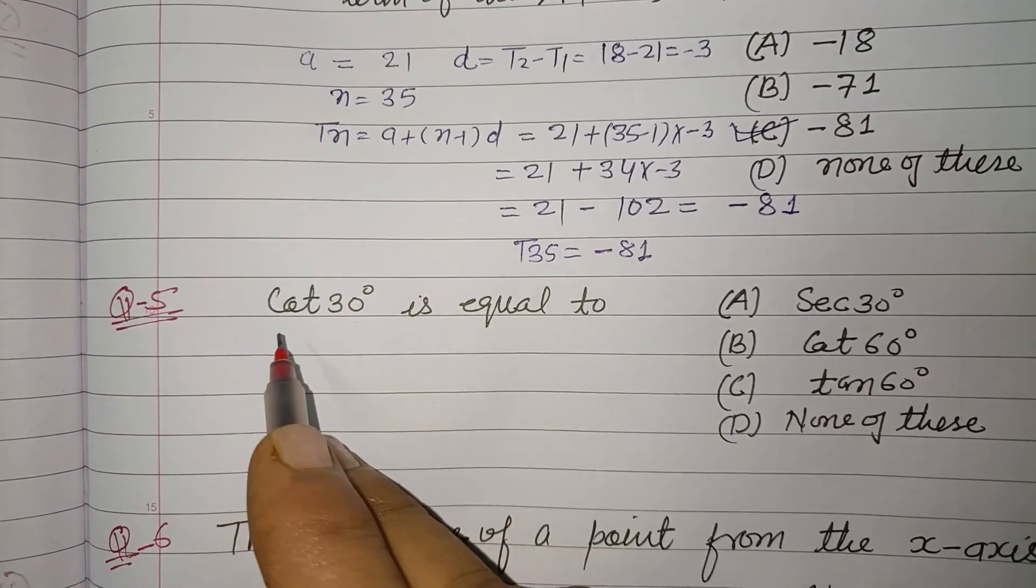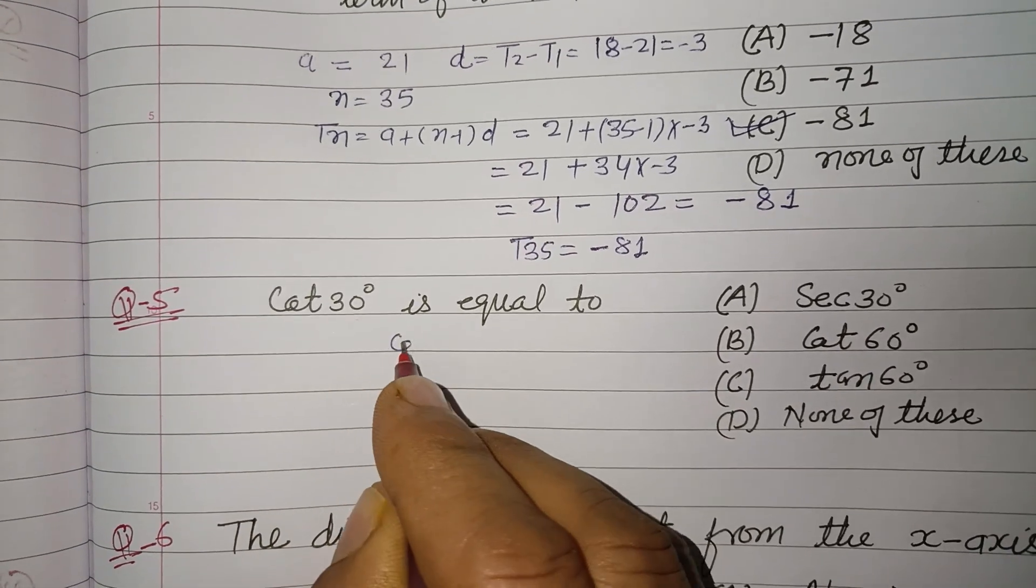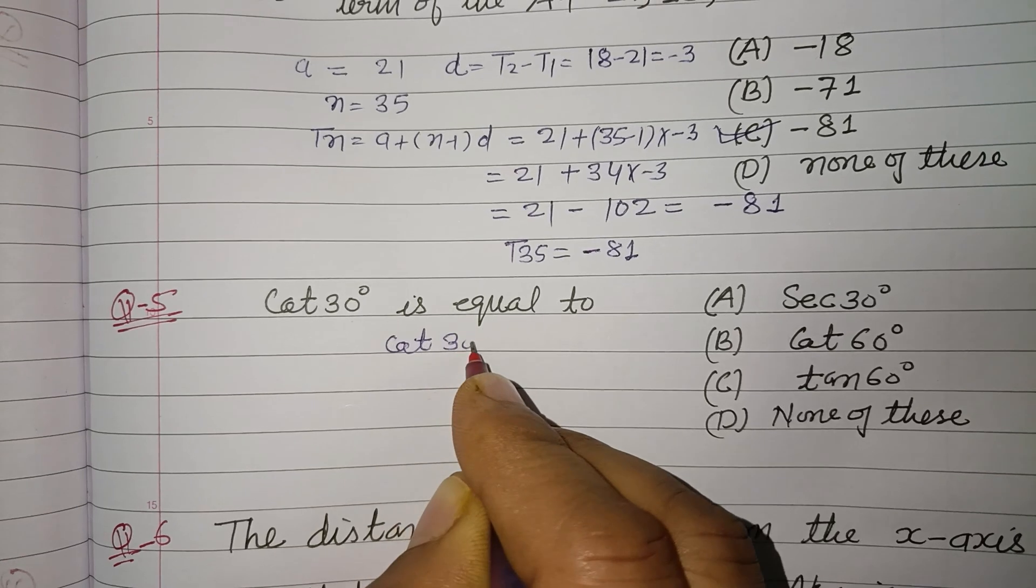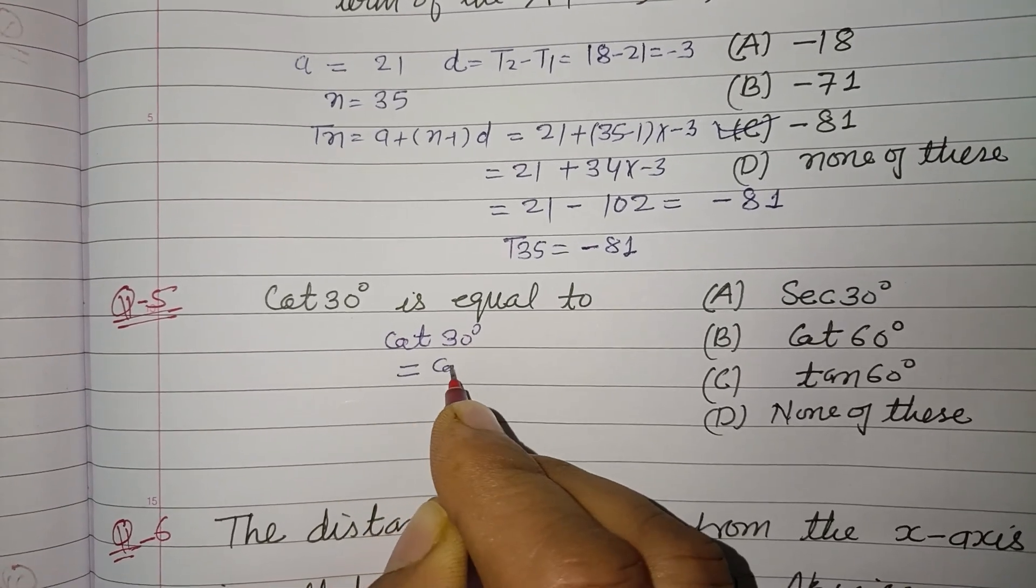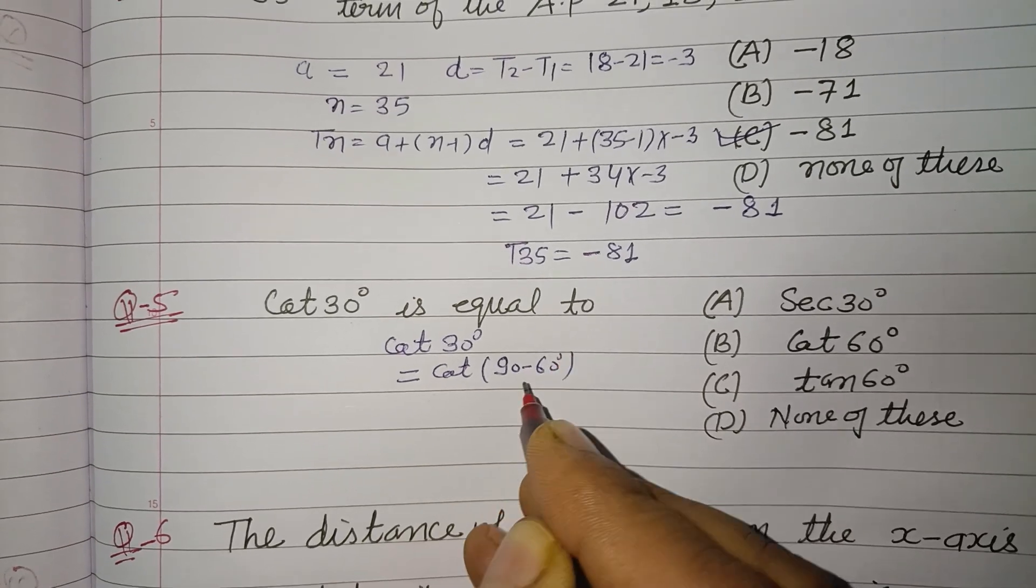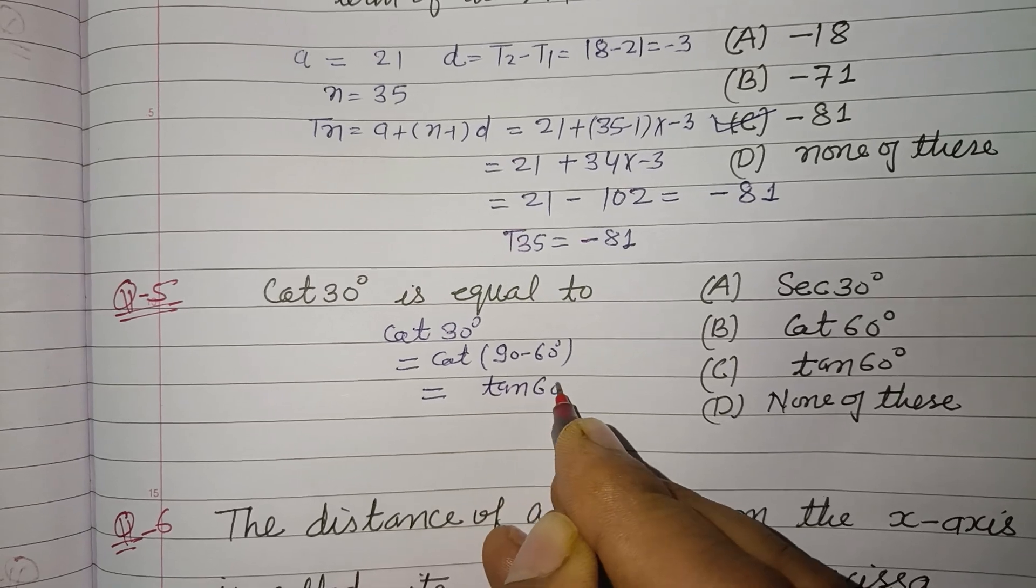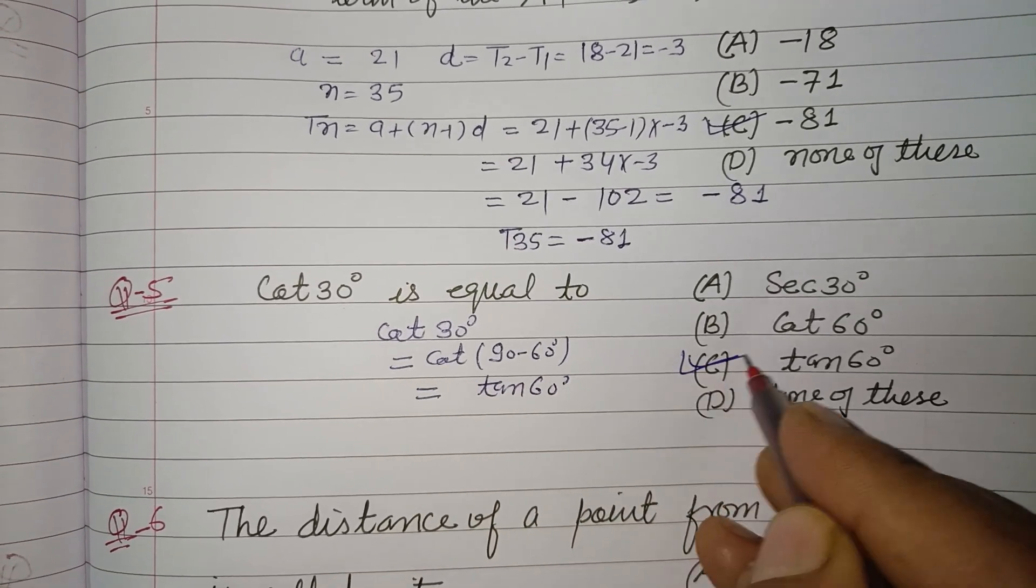Now question 5 is cot 30 is equal to. Here cot 30, you can write it as cot 90 minus 60, and cot 90 minus theta, that is tan theta. So tan 60, so correct answer is C.